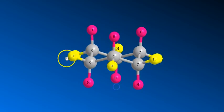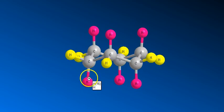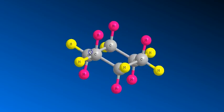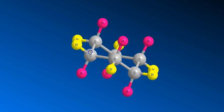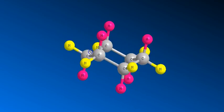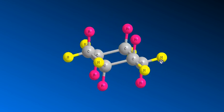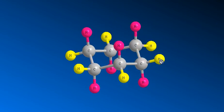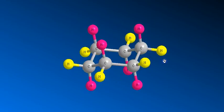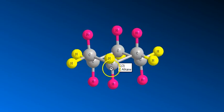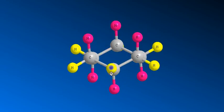Looking at the planar structure: this is equatorial, this is axial, this is axial, this is equatorial. The ring is not perfectly straight, so let me just adjust that. Alright — this is equatorial, this is axial, and again axial and equatorial.